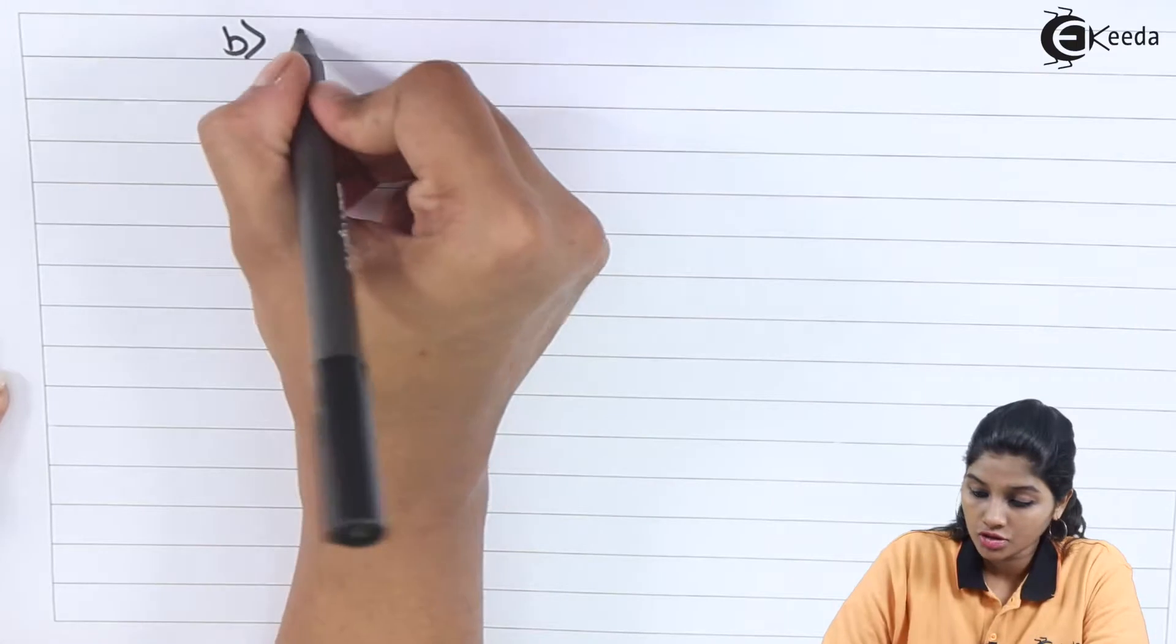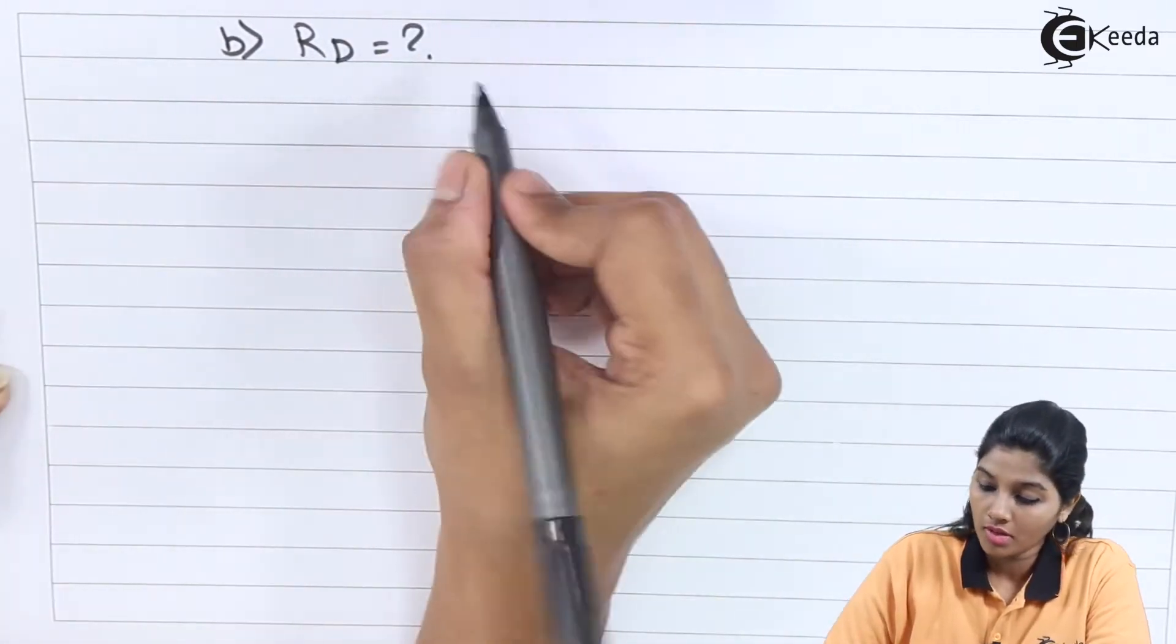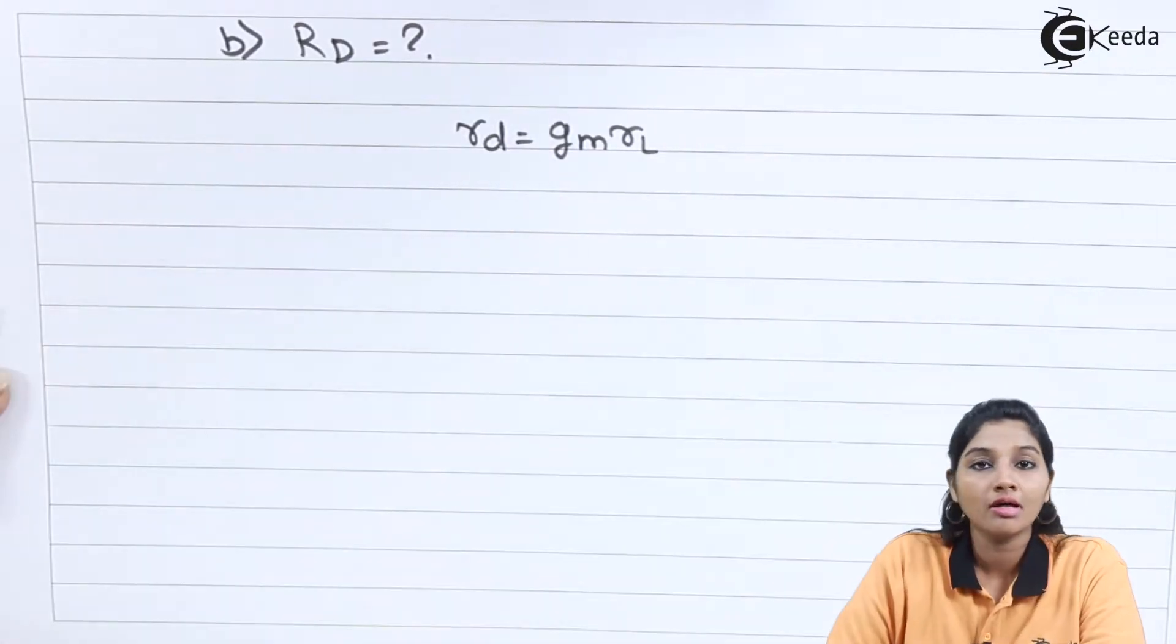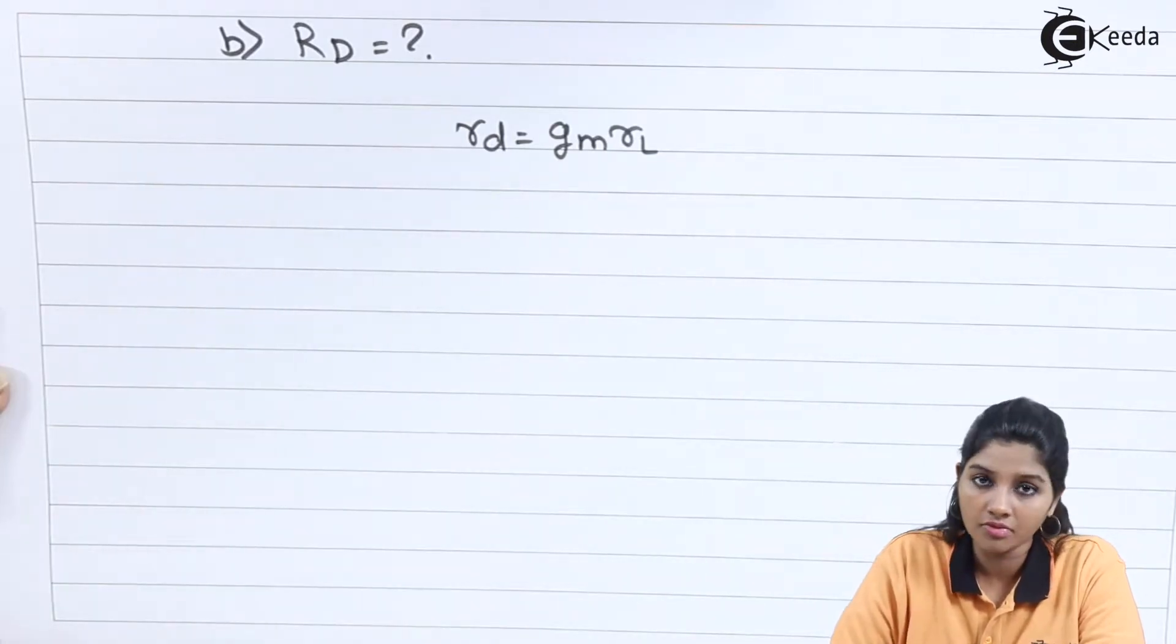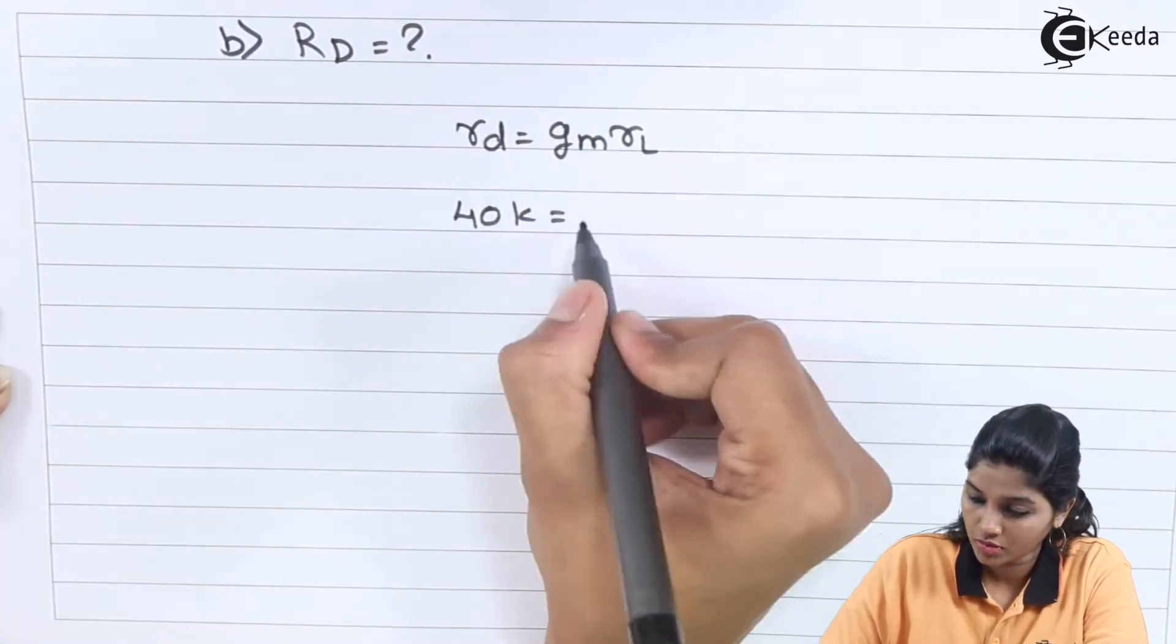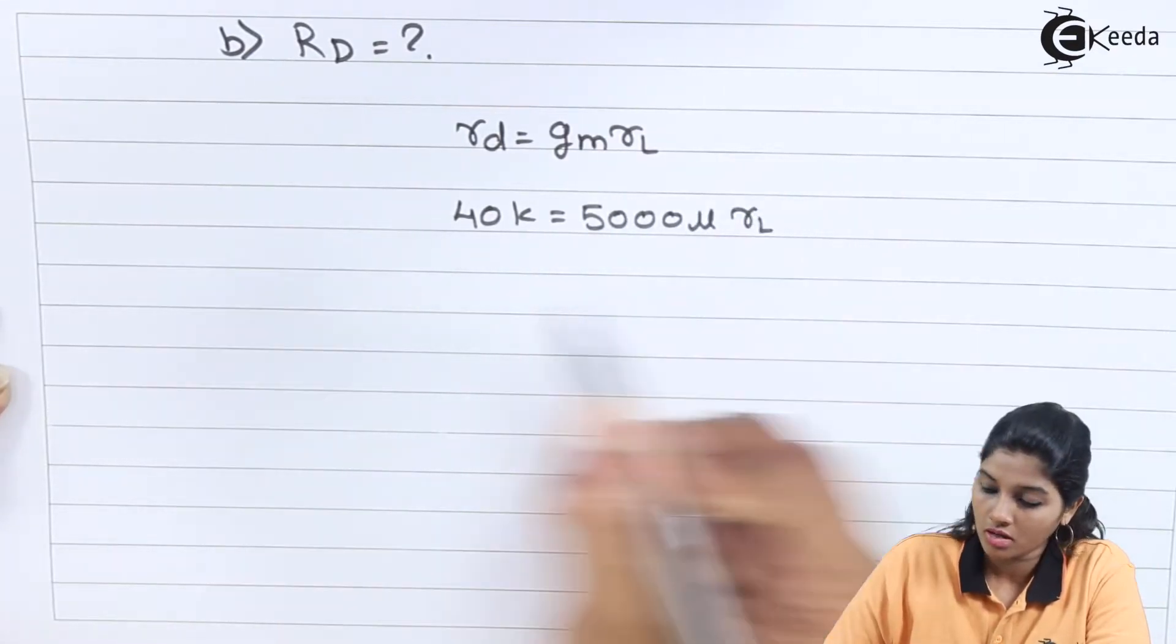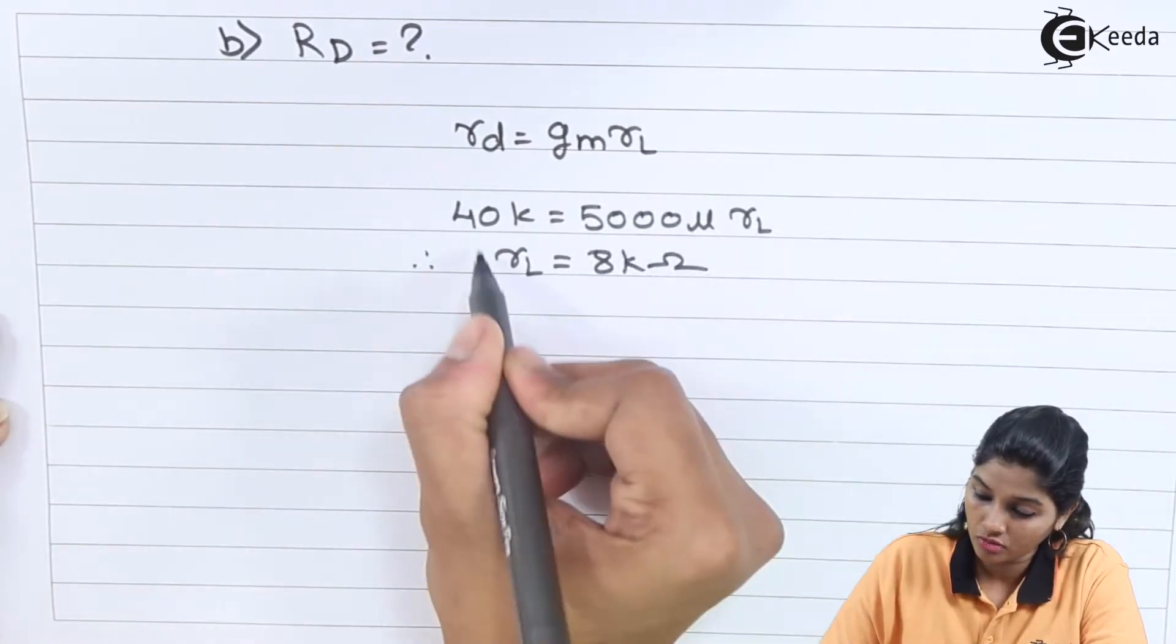So part B is to find out capital RD. Now here we need to use formula: small RD is equal to GM into Rn. The value of small RD is given in the problem, value of GM is given in the problem. So first we need to find out the value of Rn. So RD is 40K equals to GM given as 5000 micro into Rn. So we will get Rl as 8 kilo ohms.